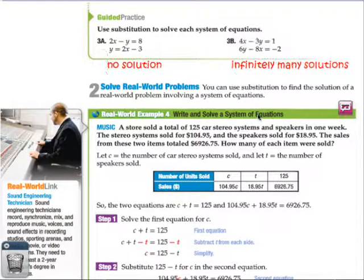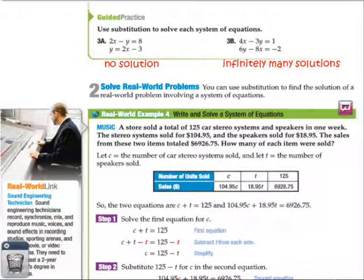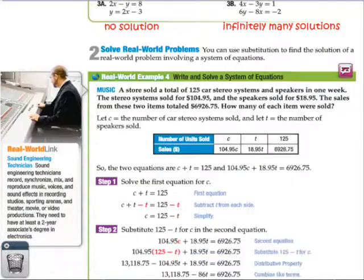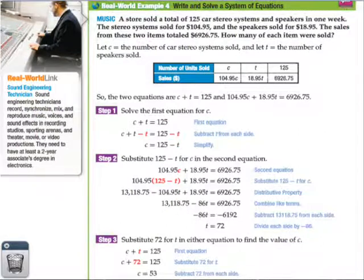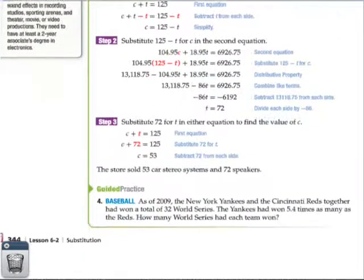Real-world problems - this is just coming up with the equations, which is usually the hard part, then solving one for either variable and plugging it back in. Here c equals the number of car stereos and t is the speakers. We want to know how many of each item were sold. We set up the equations: c + t = 125 because that's the total sold in a week, and 104.95c + 18.95t = 6926.75 for the money from each and the total cash.